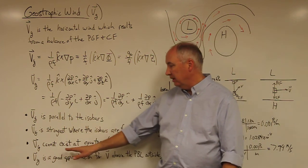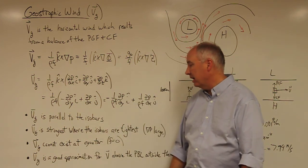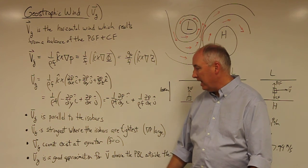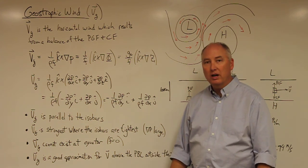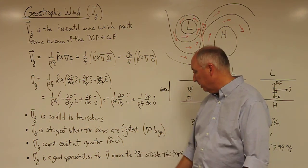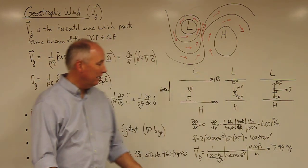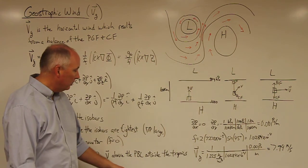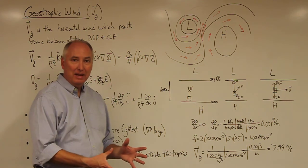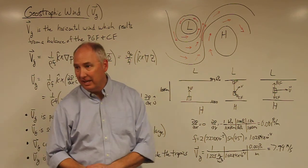The geostrophic wind cannot exist at the equator. It is also a very good approximation for the actual winds above the planetary boundary layer and outside of the tropics. We're going to look mathematically at why that might be the case.